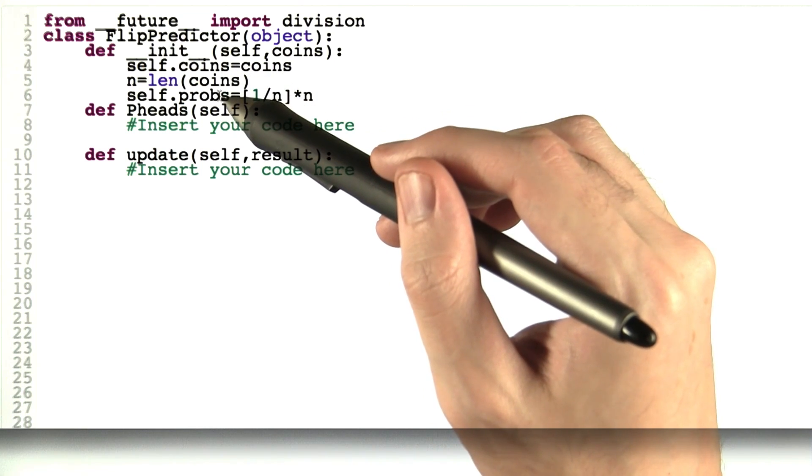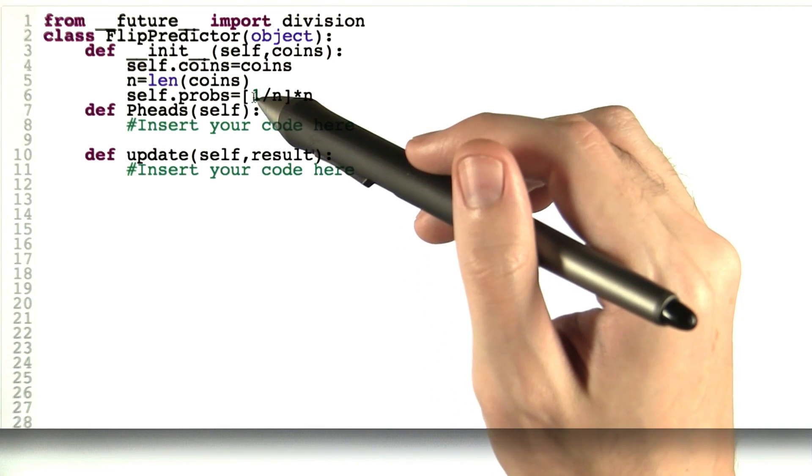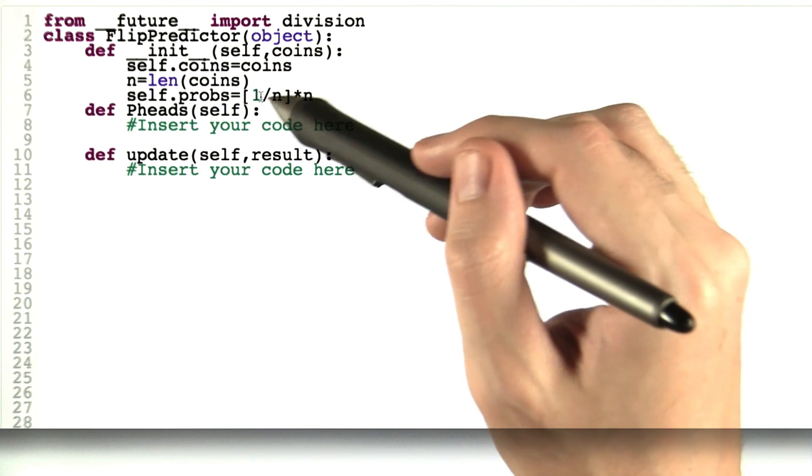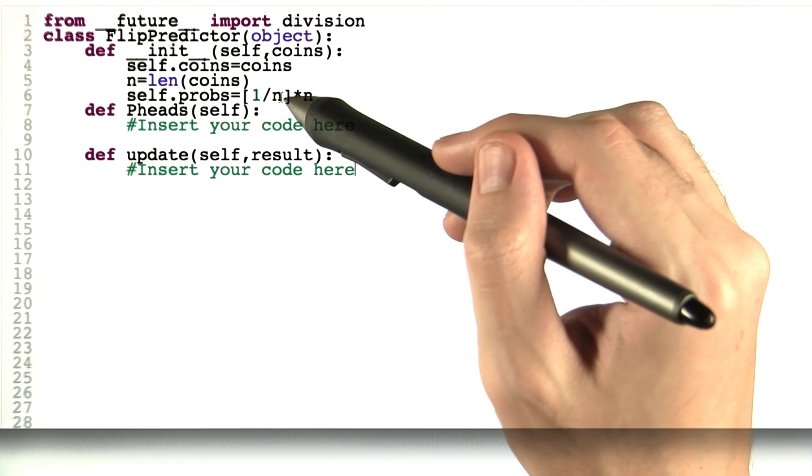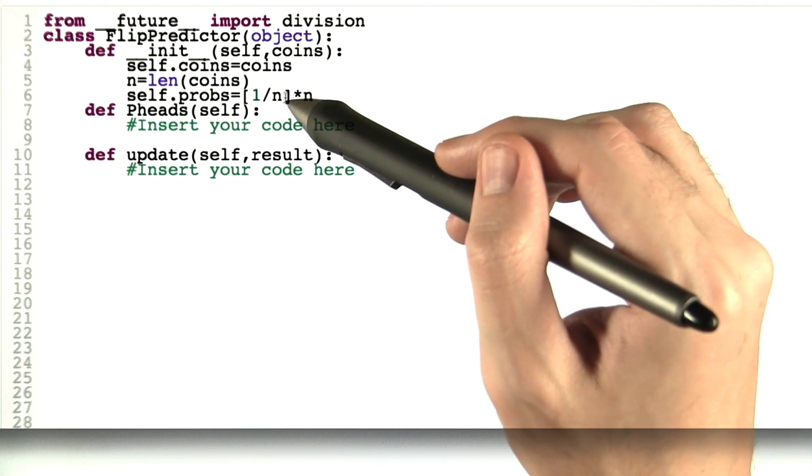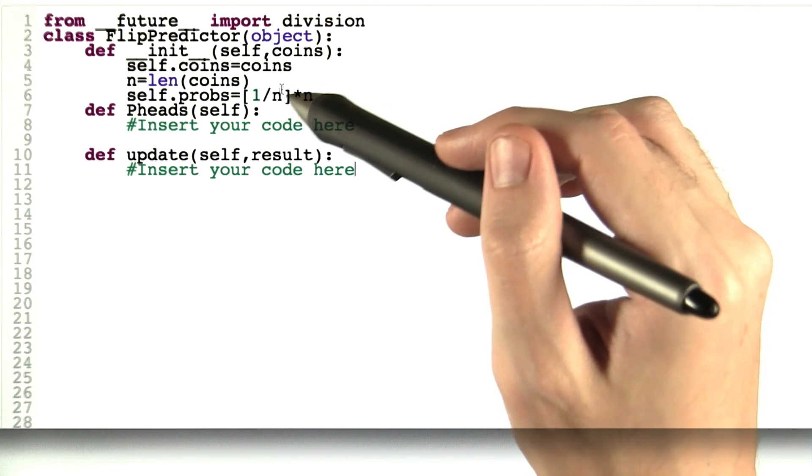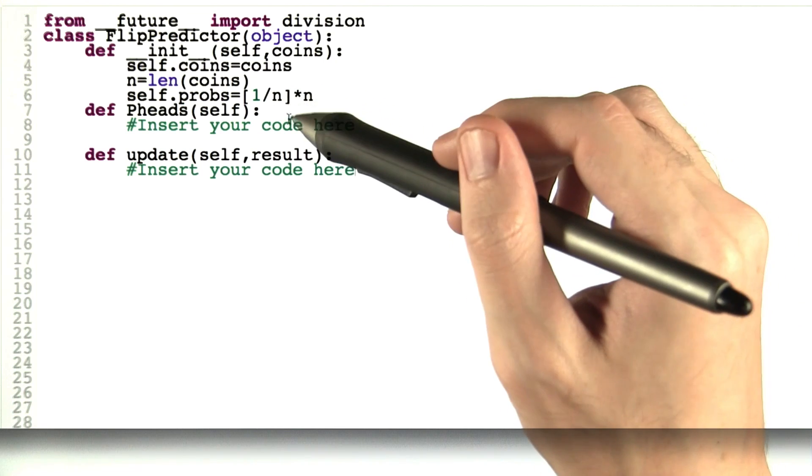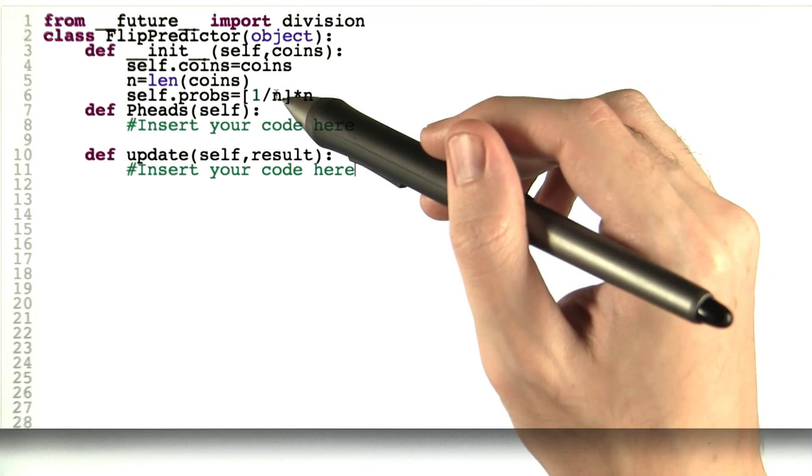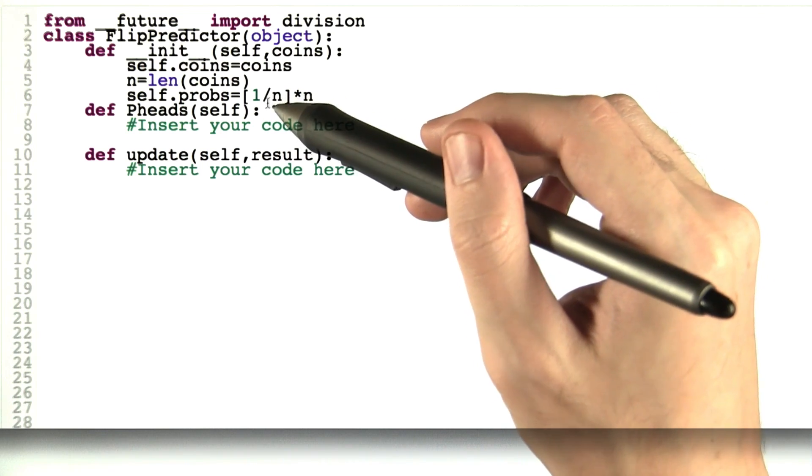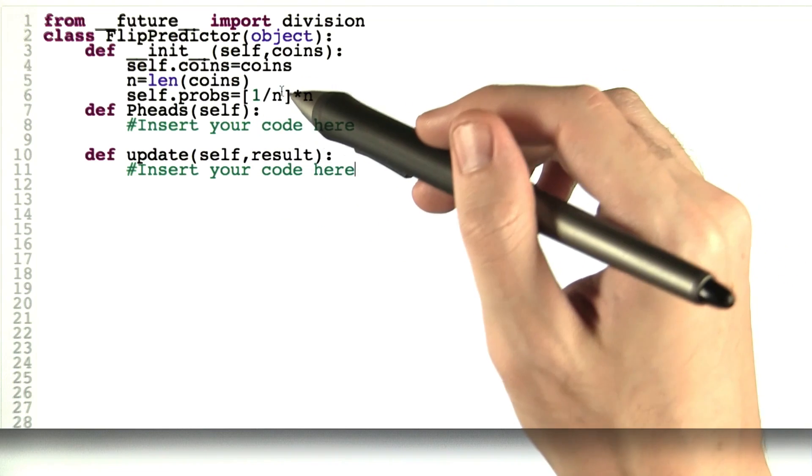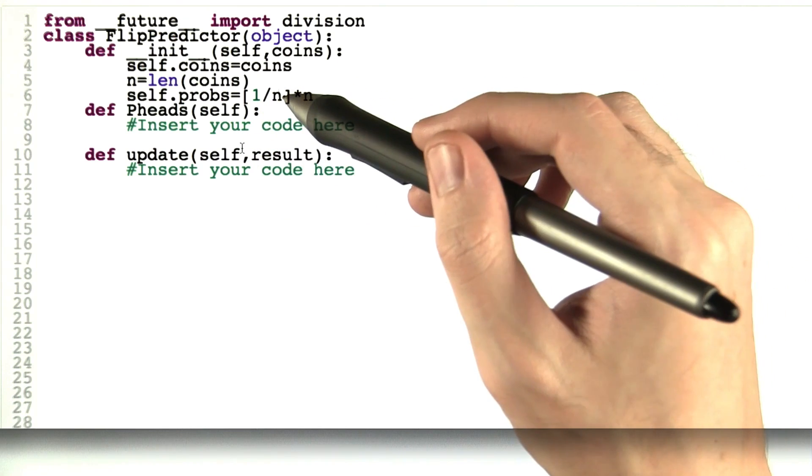And then we create this new list called self.probs. And that's just going to be a list with the same number of items as in coins giving the probability at each point in time of a coin being the coin selected. At first, since the coin was selected at random, that probability is simply 1 over n. So if there are 3 coins it's a third, if there are 10 coins it's a tenth.